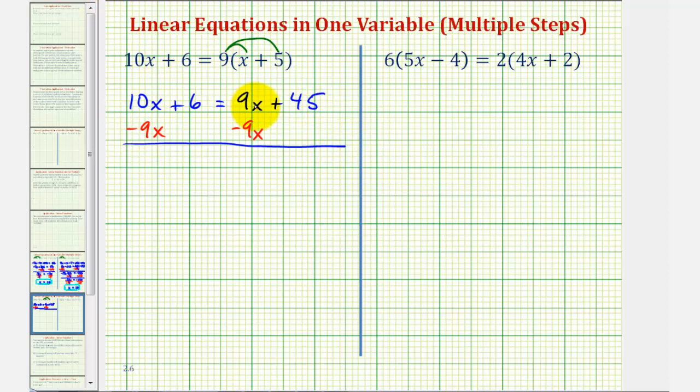Notice on the right side, 9x minus 9x is zero, so there's no longer an x term on the right side. Looking at the left side, 10x minus 9x equals 1x or just x, so this simplifies very nicely. So we have x + 6 = 45.